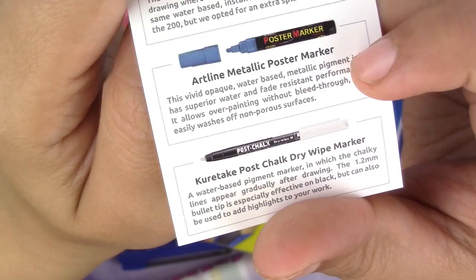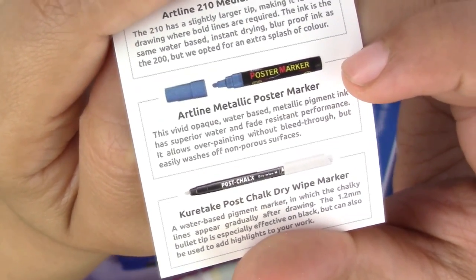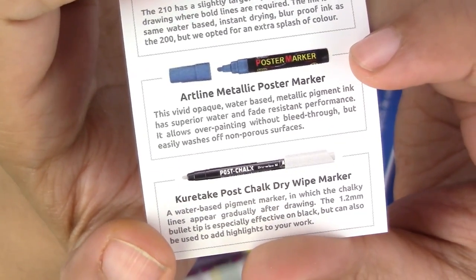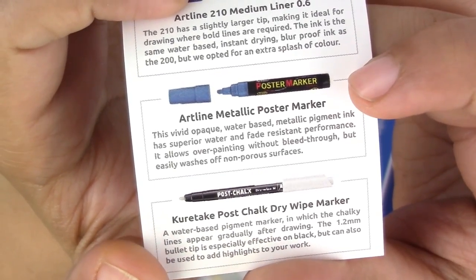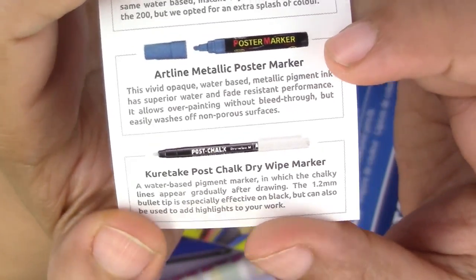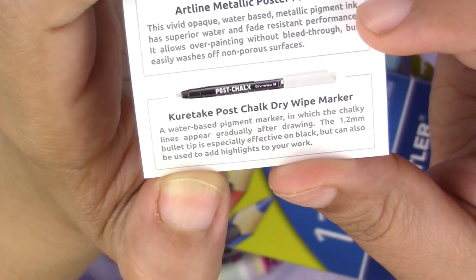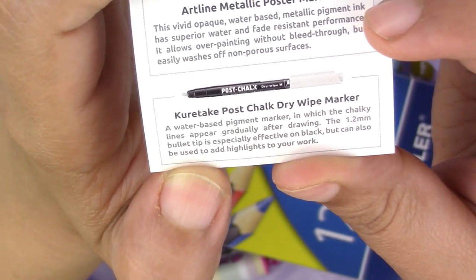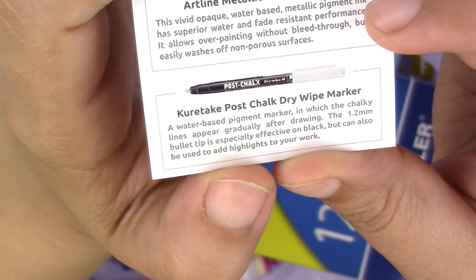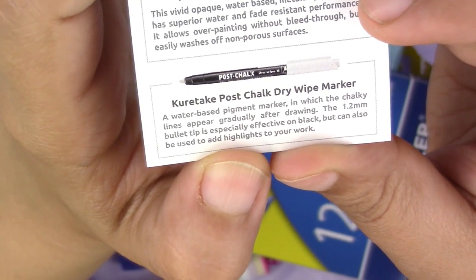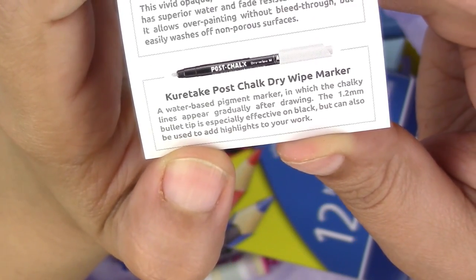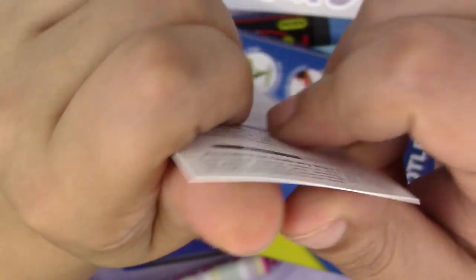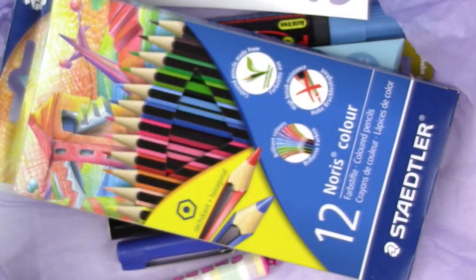Metallic poster marker. Someone's mowing their lawn, dang nabbit. Vivid opaque water-based metallic pigment. I love metallic pigments. Then we have a Kuretake Post Chalk dry wipe marker. Water-based pigment, chalky lines appear gradually after drying. That is interesting and weird at the same time.